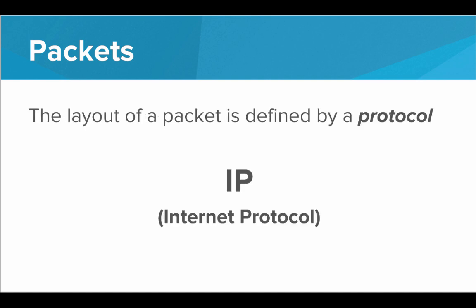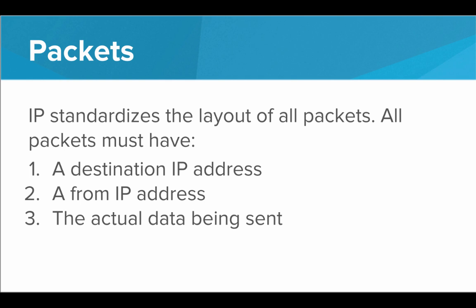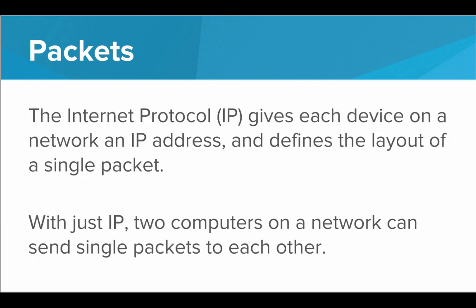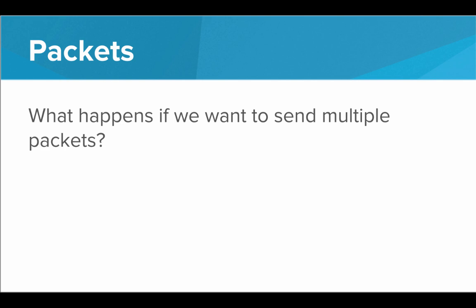The layout of a packet is defined by a protocol. All computers and devices on the internet need to agree to set up their packets in the same way so that computers on either end can understand what's inside. And this protocol is the internet protocol. So IP not only assigns an address to every computer on the internet, it also defines the layout of a packet. IP standardizes the layout of all packets, and it says that all packets must have a destination IP address, a from IP address, and the actual data being sent. With just IP, two computers on a network can send single packets to each other.